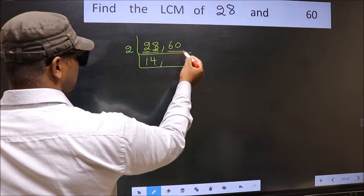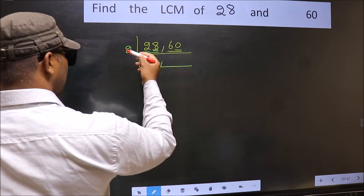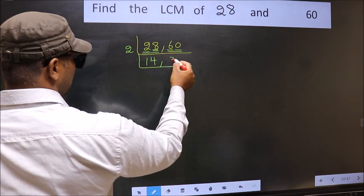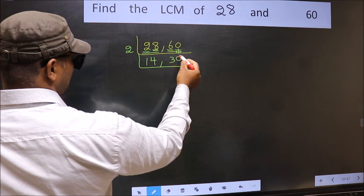Now the other number 60, last digit 0 so this is divisible by 2. First number 6, when do we get 6 in 2 table? 2×3 is 6. This 0 as it is down.